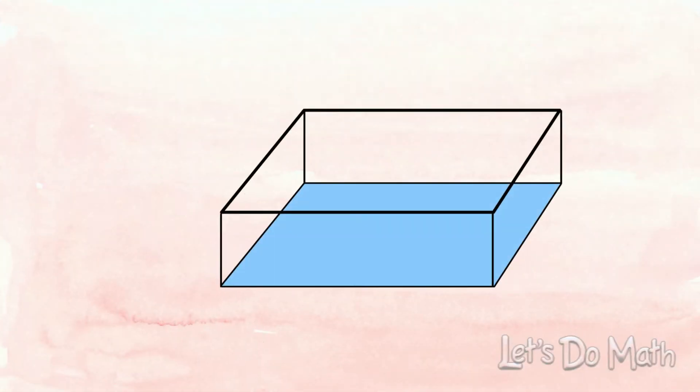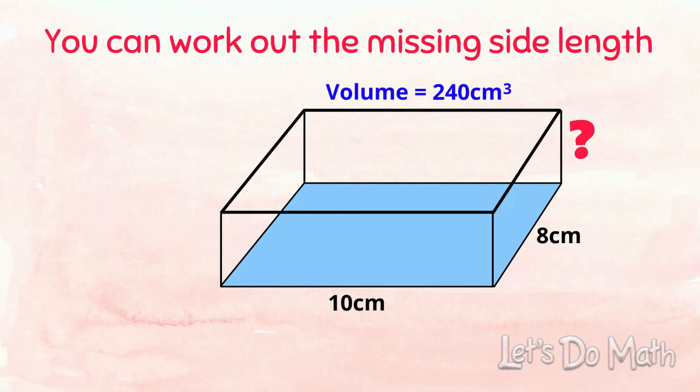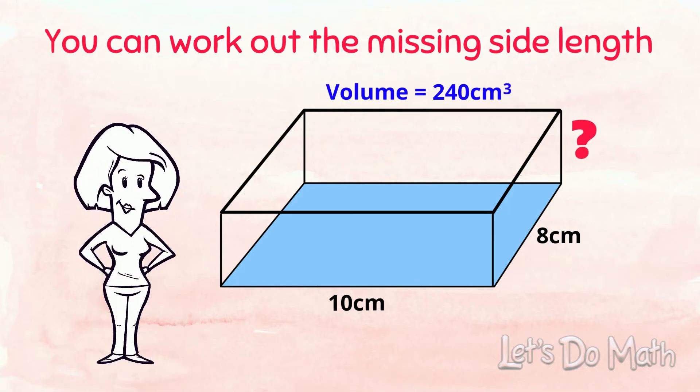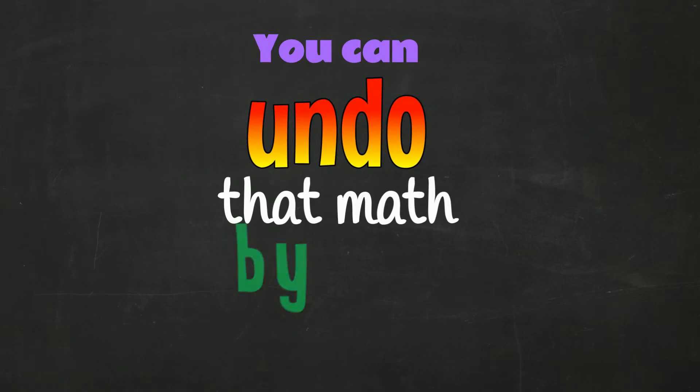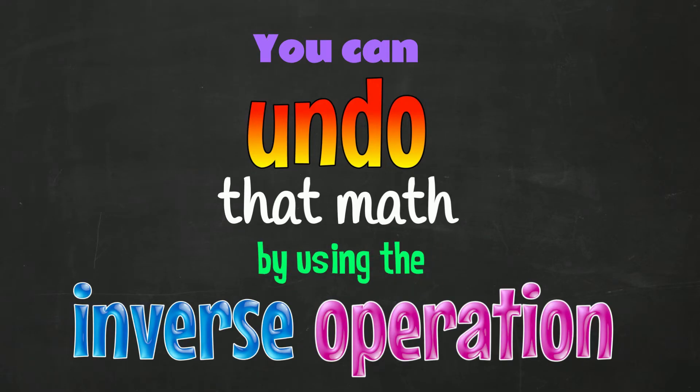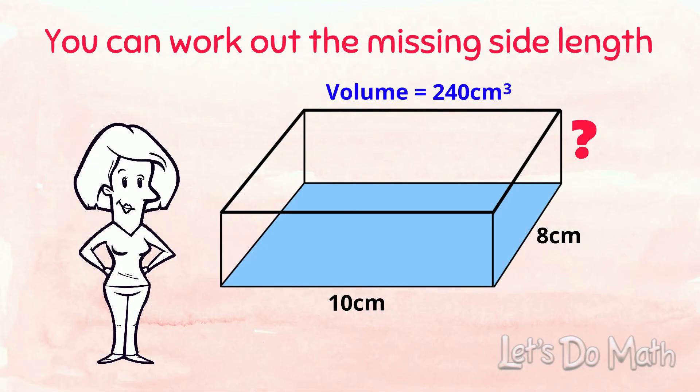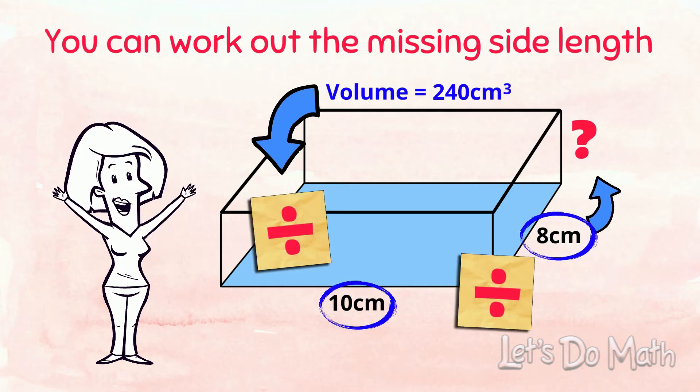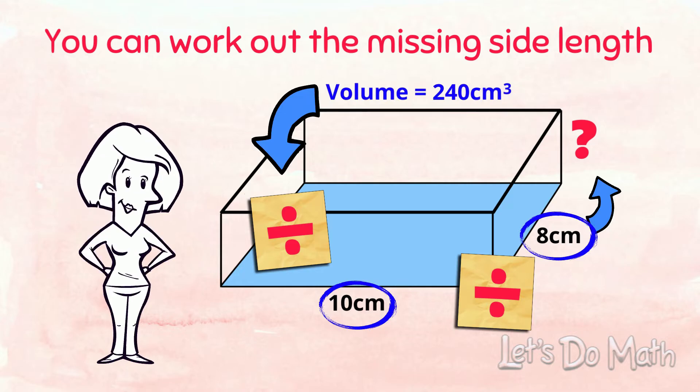In a Rectangular Prism, if you're told the volume and 2 of the 3 dimensions you can work out the missing side length. How do we do it? You know how you multiply up all your measurements to get the volume? Well, you can undo that math by using the INVERSE operation. You can divide the volume DOWN by your measurements to find the missing side length. Check it out on this example!